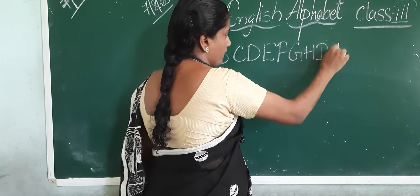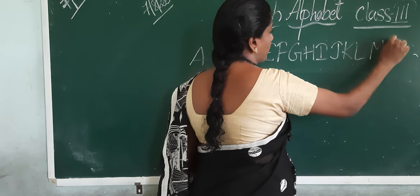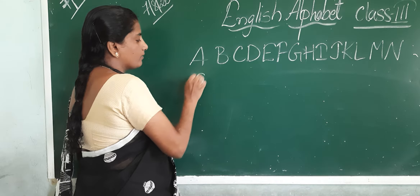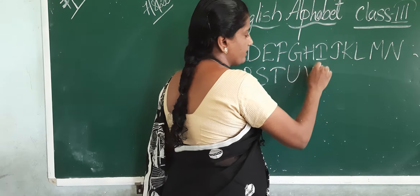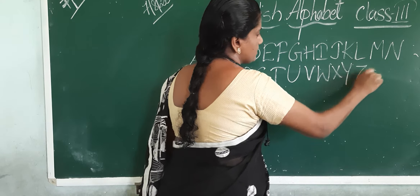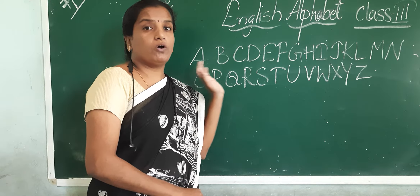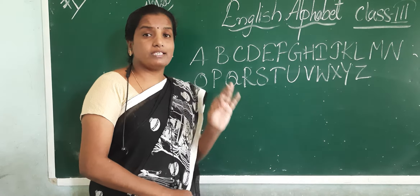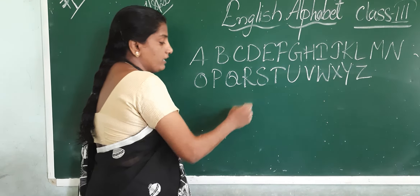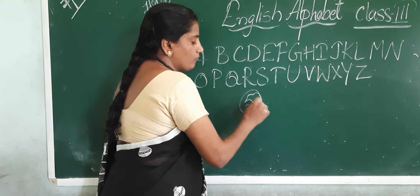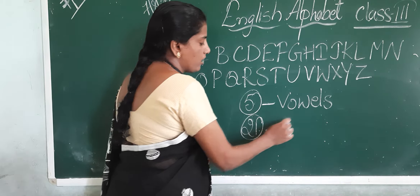We have divided the alphabets into two parts. What are those? Vowels and consonants. These 26 letters are in a correct order. The alphabet arranged in order is known as alphabetical order, or the dictionary order.